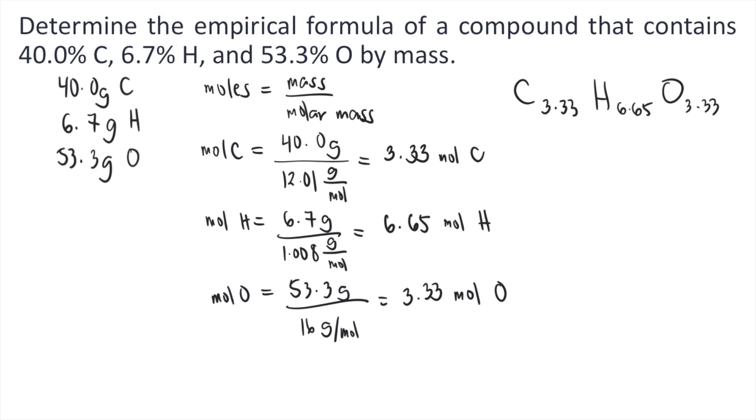Now you need to pick the smallest of all the subscripts. So in this case, the smallest subscript is 3.33. After doing that, you will divide all the subscripts by that smallest number. So for carbon, 3.33 divided by 3.33, obviously that's equal to 1.